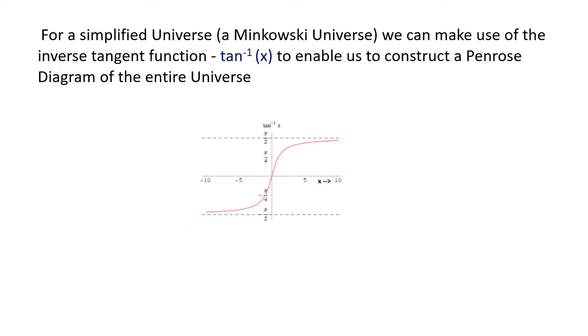In spacetime of an infinite universe in which space isn't curved, the Minkowski universe, we can make use of the inverse tangent function. This maps an infinite range of values onto a finite range. Inverse tangent of minus infinity is minus pi divided by 2. Inverse tangent of plus infinity is plus pi divided by 2.